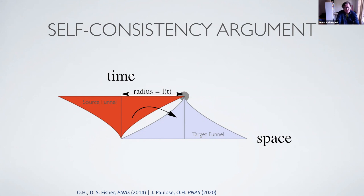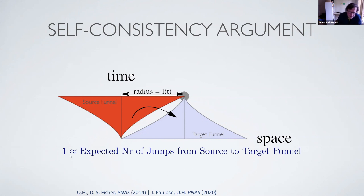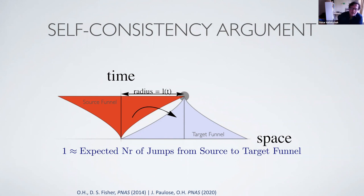If the expected number of jumps is much less than one, it's inconsistent — it means the gray circle cannot actually be occupied with high probability. You can also make the reverse argument: if the jumps are too numerous, the proposed funnel is too small. The self-consistency demand is that the expected number of jumps from source to target funnel should be of order one for any proposed growth curve to be consistent. This gives you the leading-order behavior of the epidemic.